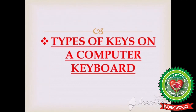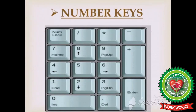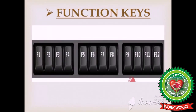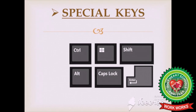Next are the types of keys on a computer keyboard. We will learn the names of keys on a computer keyboard. Number one is number keys. Number two is alphabet keys — you all know about these keys. Number three is function keys, which are at the top of your keyboard — everyone look at the top of your keyboard, those are the function keys. Number four is special keys. So we have learned different types of keys.